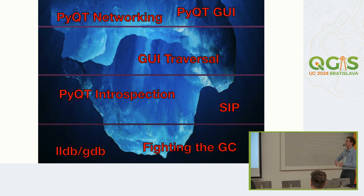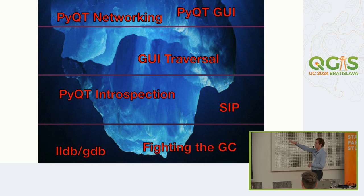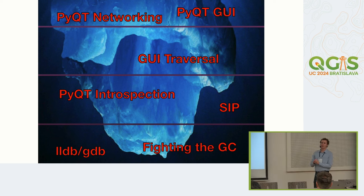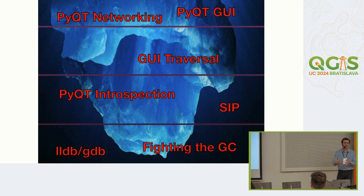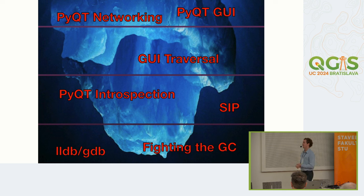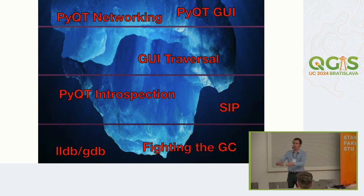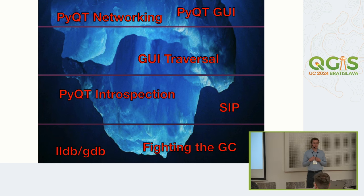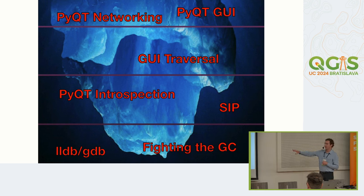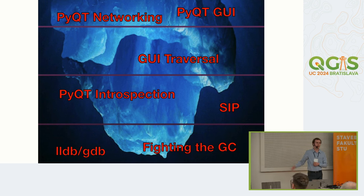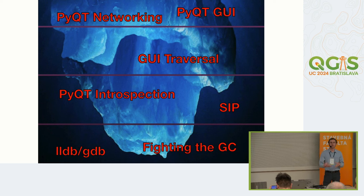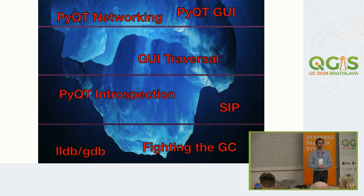Using LLDB and GDB, we can identify all of the errors in these introspection and SIP layers. Additionally, when we pass API objects and information, there's no guarantee after we pass it that we can ever use it again — so we have to consider them disposable. That's where fighting the garbage collector comes in. The GC — garbage collector — is what deletes items after we've used them; without it, our computers would just run out of memory over time.